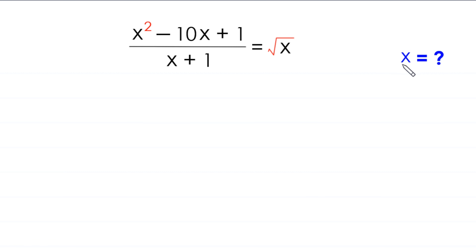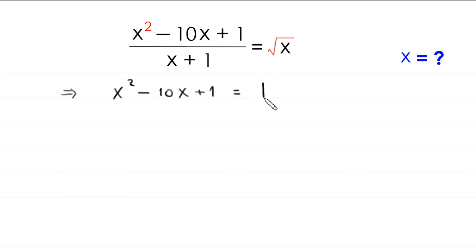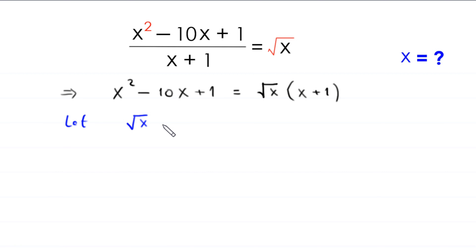Let's start. If we multiply both sides of this equation by (x + 1), this implies that x² - 10(x + 1) is equal to √x · (x + 1). Now we suppose that √x = y, which implies that x = y².